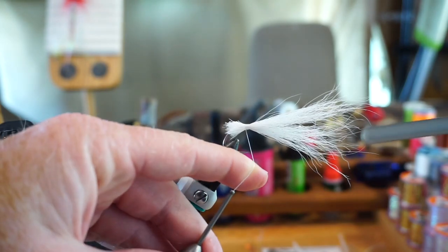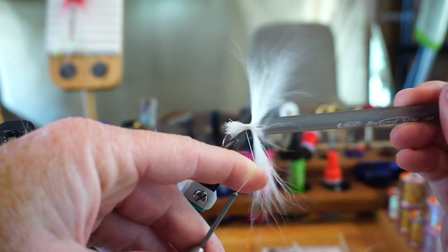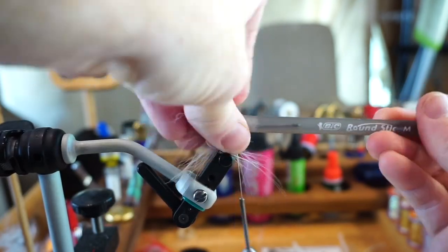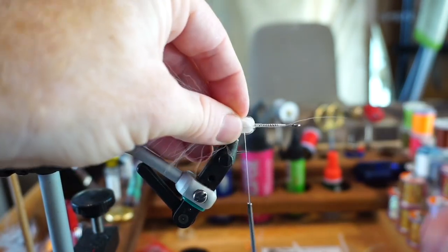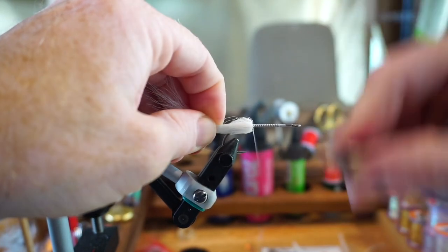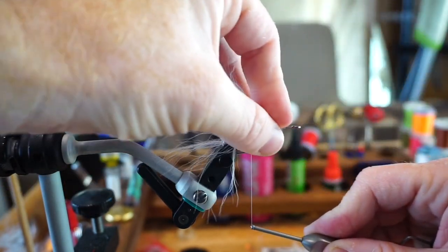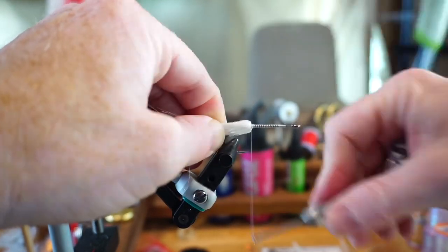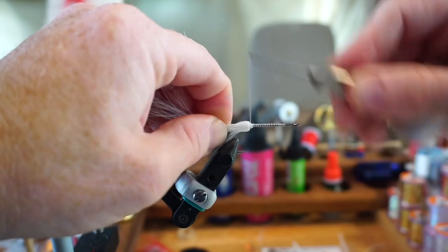Empty a bic pen to use the body tube as a tool to push the fur rearward. Grab the fur with your fingers, and then pull the thread up through the fur and make a thread dam in front of the fur to keep it angling rearward. If you let go of the fur too soon, it will be difficult to get it facing rearward again, so try not to do this.